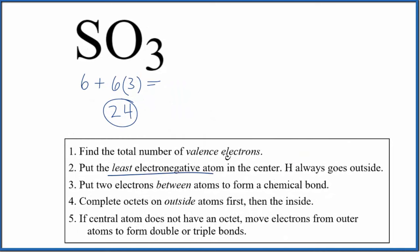We'll put the least electronegative atom in the center. So we're going to put the sulfur in the center here, and then we'll put oxygens around it. Now we can put electrons, two electrons, a pair of electrons between atoms, and that's going to form the chemical bond. So we'll put two here, here, and here. So we've formed our chemical bonds.